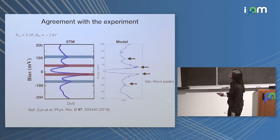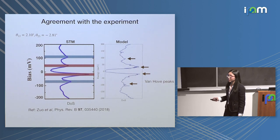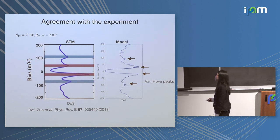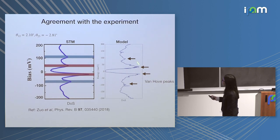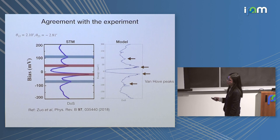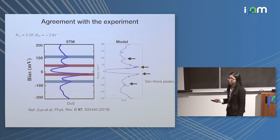This is a comparison with an STM study. They accidentally made a twisted trilayer sample and did an STM study. We found that our model agrees with the STM data, but in this case their twist angles are pretty different, so it doesn't tell us too much — but at least it gives us some confidence about our model.